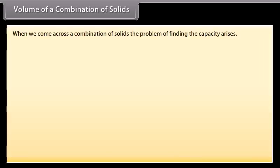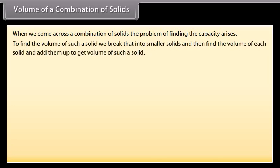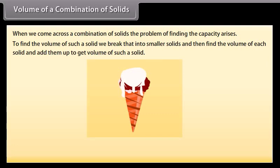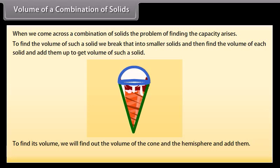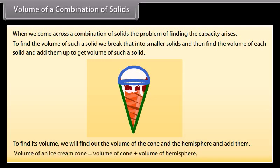When we come across a combination of solids, the problem of finding the capacity arises. To find the volume of such a solid, we break it into smaller solids and then find the volume of each solid and add them up. For example, the volume of an ice cream cone equals the volume of the cone plus the volume of the hemisphere. Let's solve an example to understand more about this.